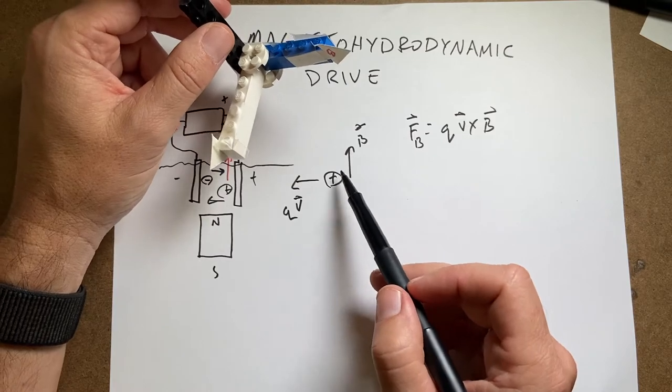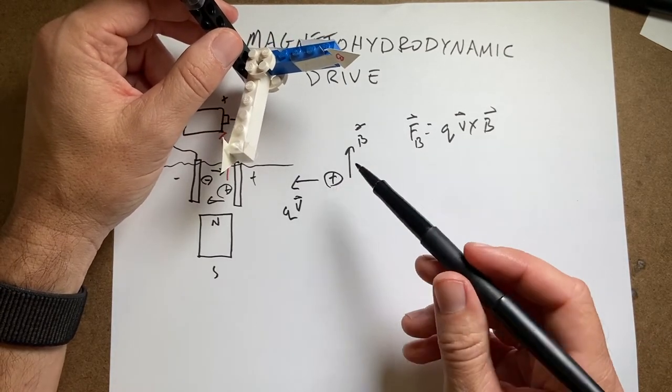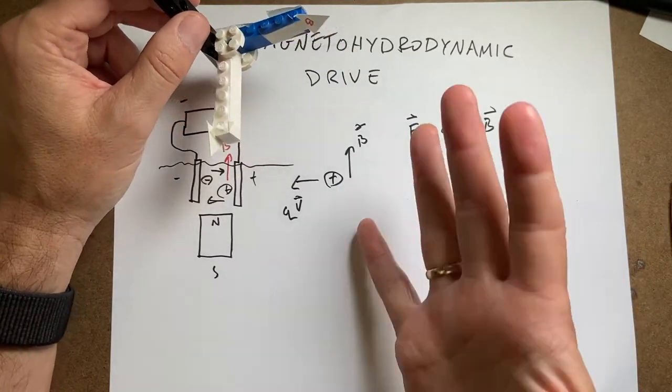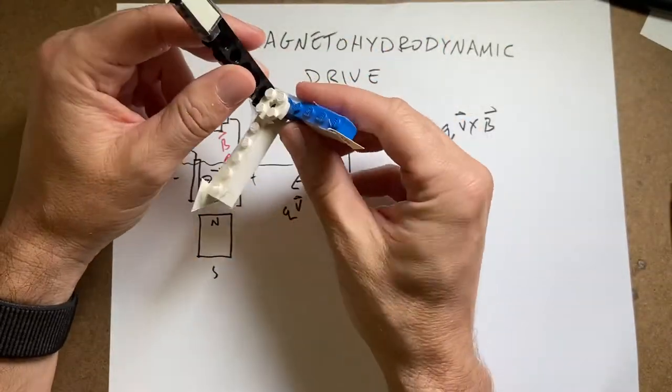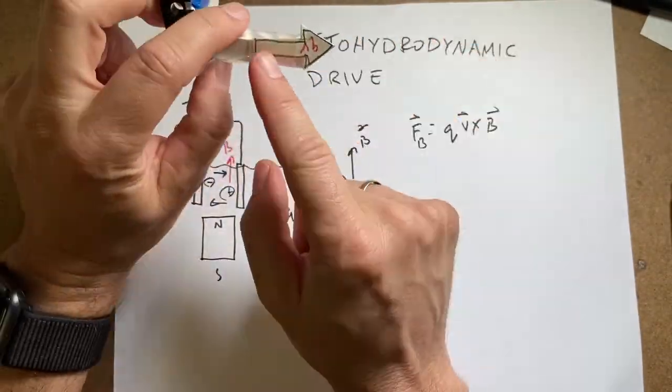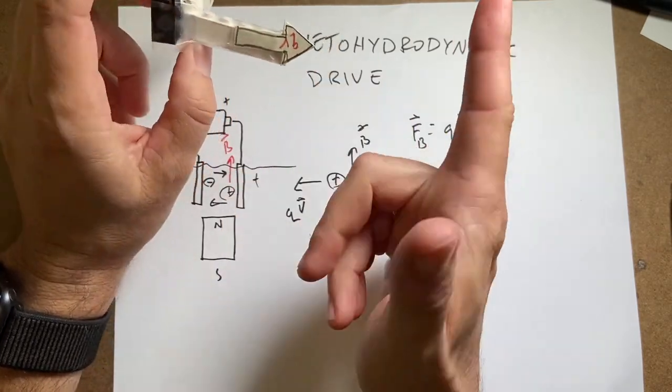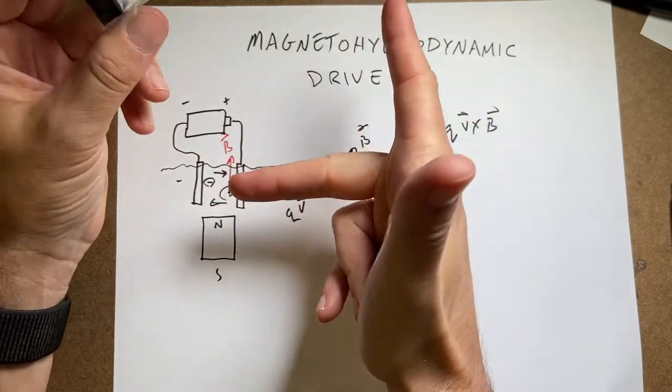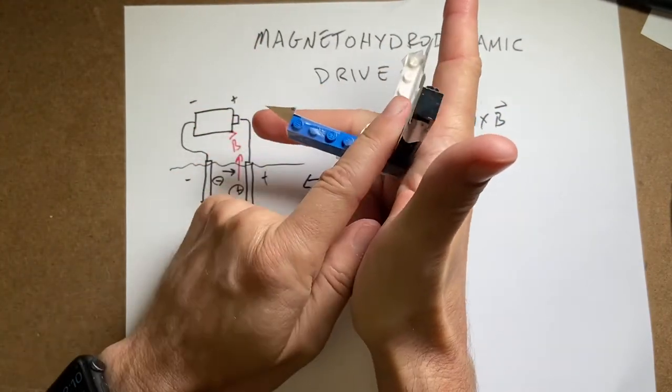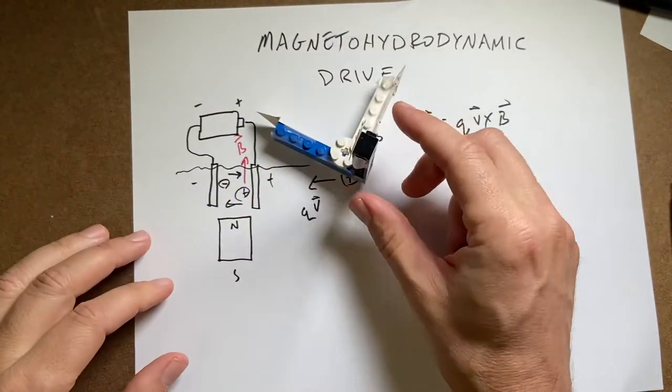So there's only two vectors that do that. There's one that comes this way out of the screen and one that goes into the screen. So we can use our right hand rule. This is my right hand, see? And put QV in the direction of your finger, B in the direction of your middle finger and the thumb points in the direction. So it's like this. See? So I made this little thing so we can see that.